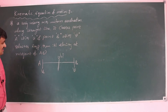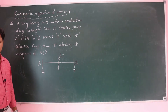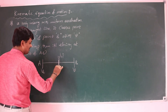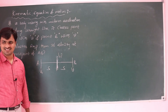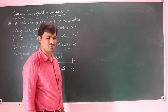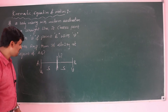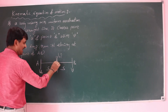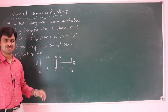Please concentrate on class. For uniform acceleration, we consider the total distance between A and B as 2s, so each half is distance s. In the first half, initial velocity is u and final velocity is V dash.